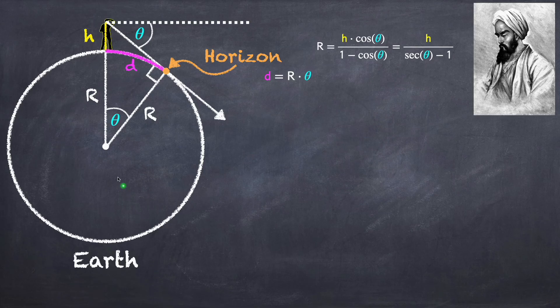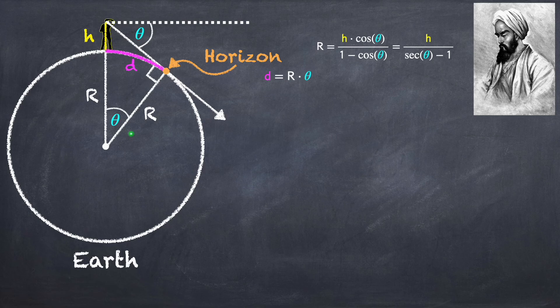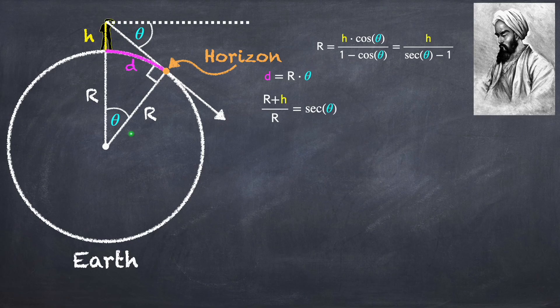Taking a look at this triangle, the hypotenuse r plus h divided by r is going to be hypotenuse over adjacent. So that's going to equal the secant of theta, which is 1 over cosine theta. So we have that r plus h divided by r equals secant theta.